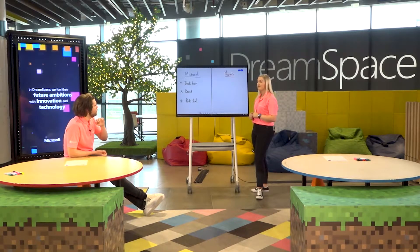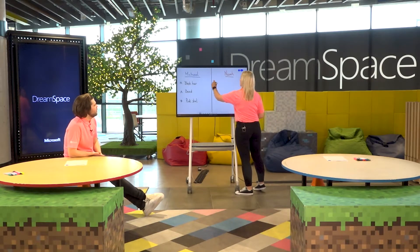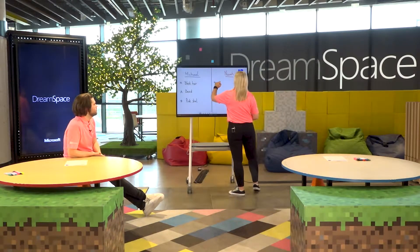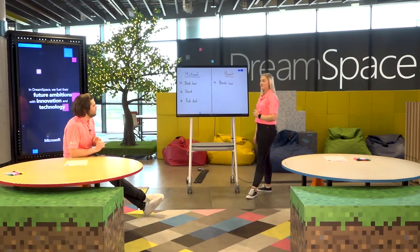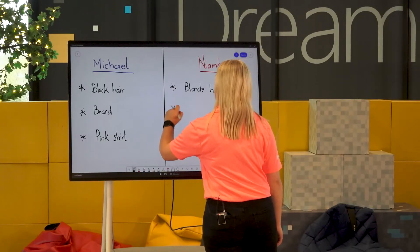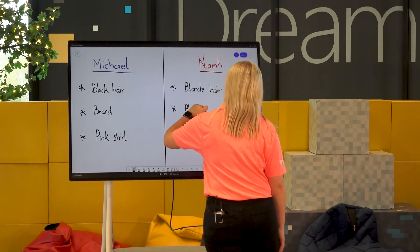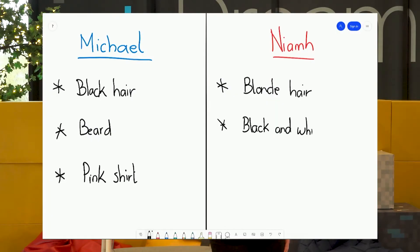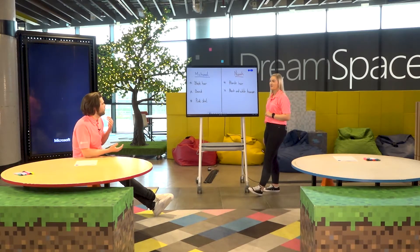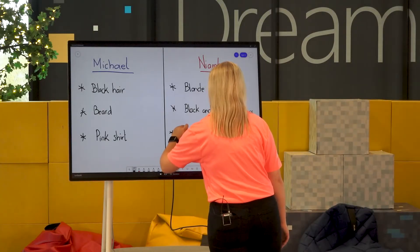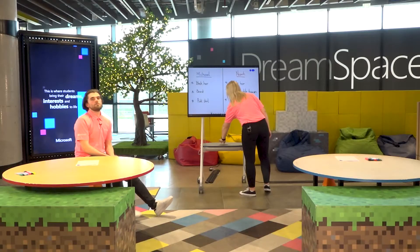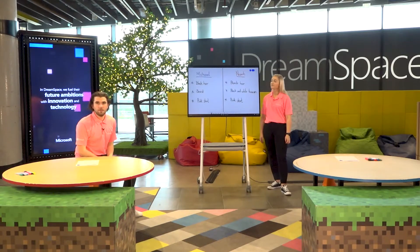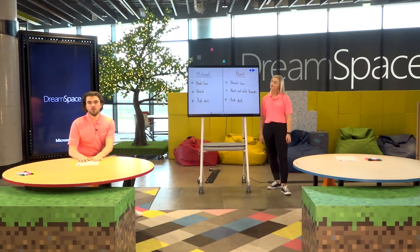Thanks very much. Would you mind writing down yours, Niamh? I might call them out to you. I think the first one I want to focus on in my pixel art character of you is your blonde hair — I think that's the first thing. Perfect. I think after that, maybe your black and white trainers. Perfect. And then finally, just so we have something in common, probably your pink shirt as well. Great. Now we have picked out what important details we want to include in our pixel characters of each other. Now it's up to us to actually create those using our pixel sheet right here in front of us. Let's get started.